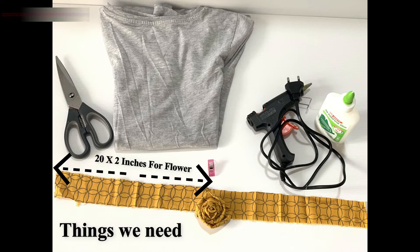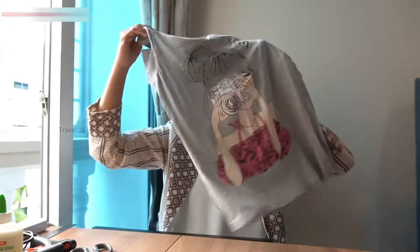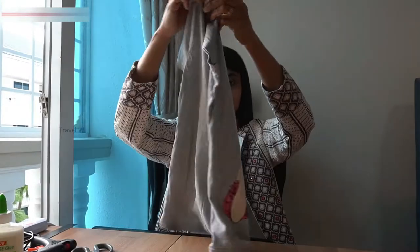Things we need to make a choker necklace: an old t-shirt, a 20 by 2 inches cotton fabric, scissors, and a hot glue gun. People who do not have a hot glue gun can use any all-purpose white glue, but it takes a while to dry up.